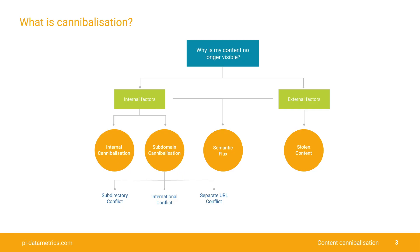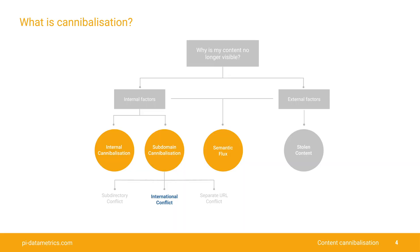There are any number of reasons why your website can suddenly lose visibility in Google. It could be down to an algorithmic update, and we've seen plenty of those recently. It could be down to the fact that your competitor has suddenly overtaken you due to the fact that they have perhaps optimized their content much more effectively. It could be down to a technical error. But one of the main problems impacting visibility of content these days is cannibalization. Now, we've divided it here into two broad categories: internal and external.